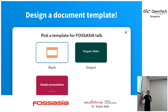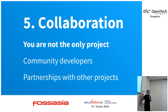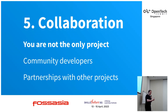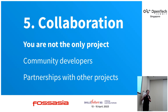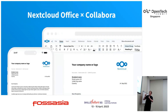The fifth and final strategy is collaboration. In open source, projects are often still quite insular. You need to understand you're not the only project out there — there are many others you can collaborate with. There are also community developers not necessarily in your direct sphere of influence.